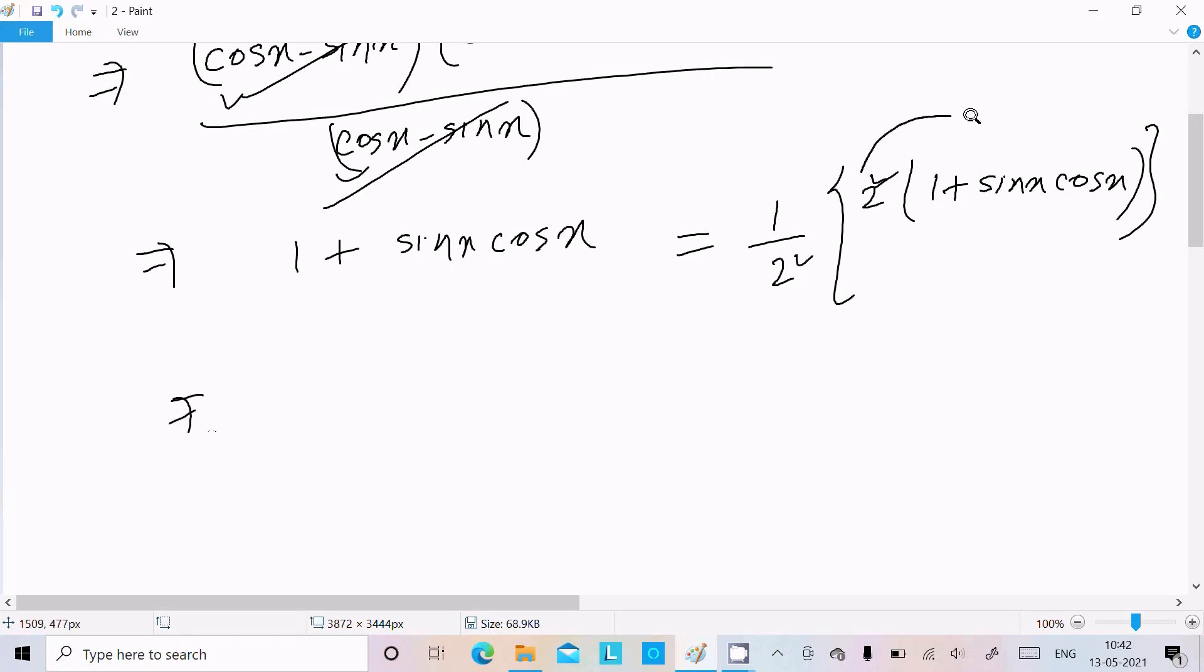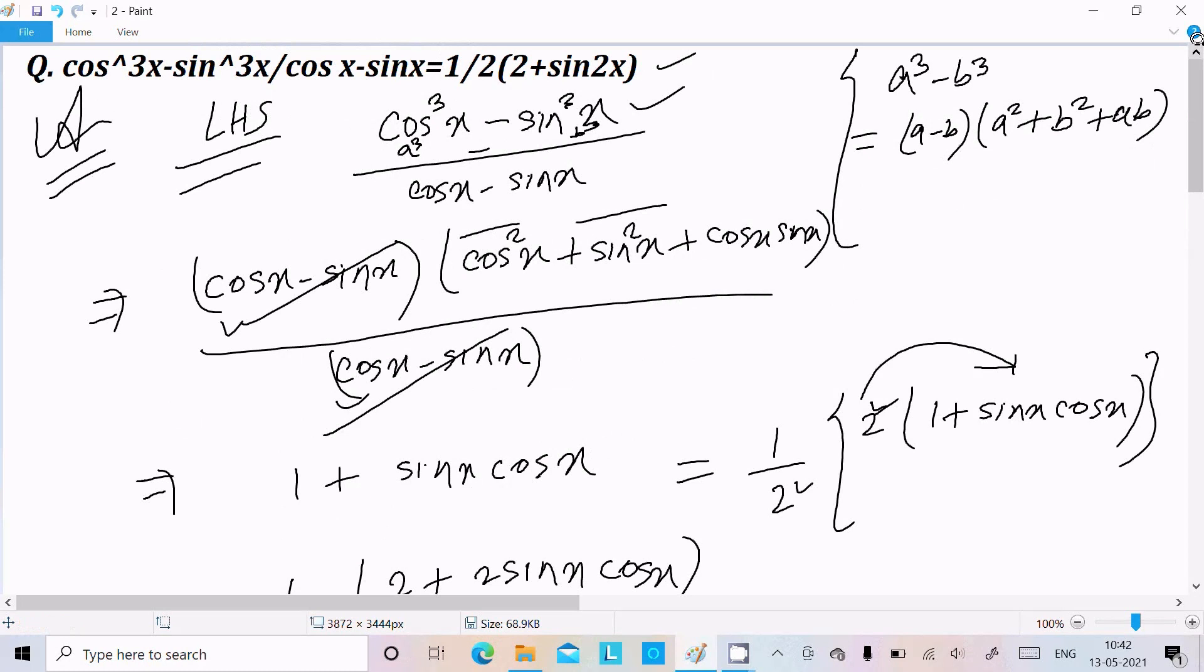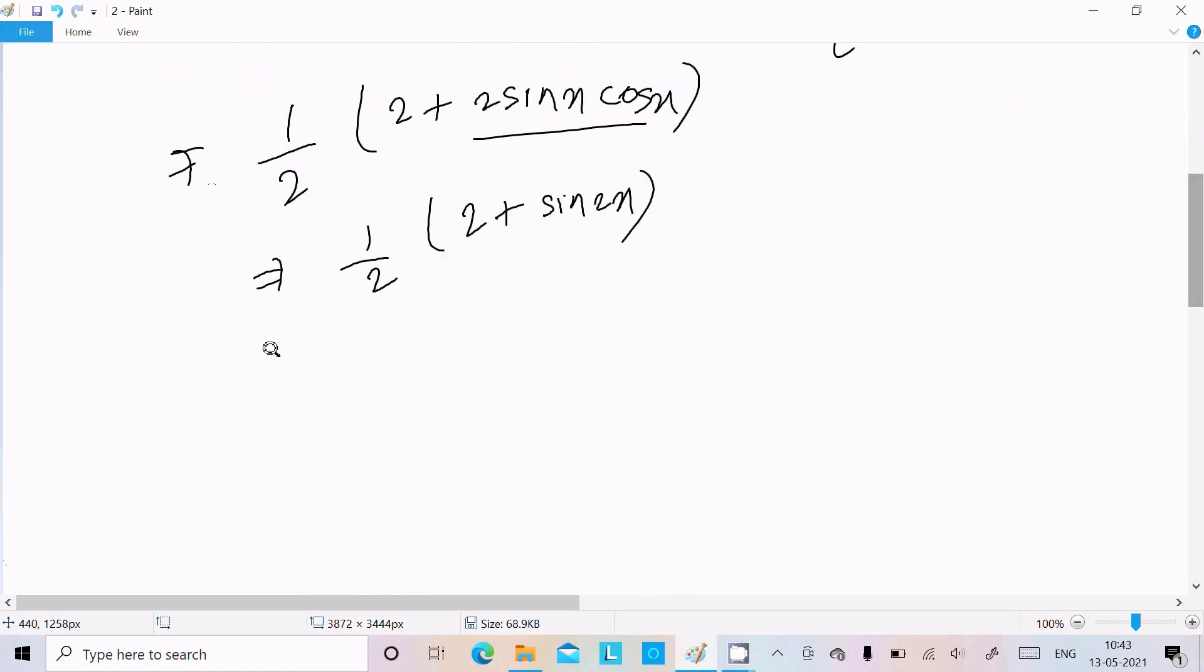Now this 2 I am going to multiply here. So 1/2 times (2 plus 2sinx times cosx). Now 2sinx times cosx, the value is sin2x. So we can write 2 plus sin2x. So here 1/2(2 plus sin2x) it comes. So we can write LHS equals RHS, proved.